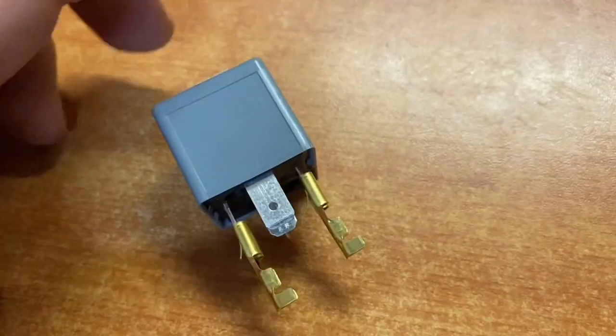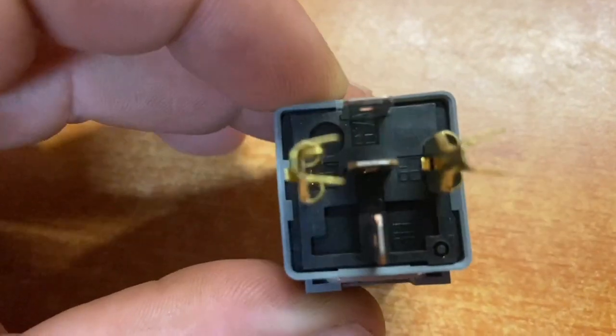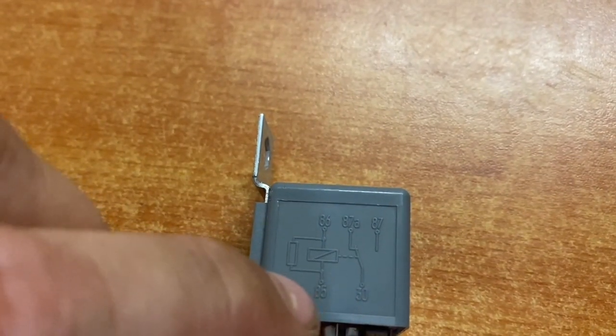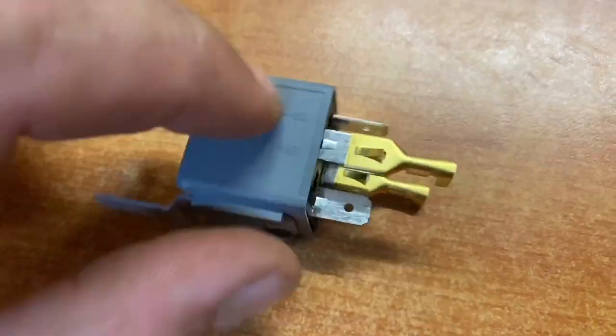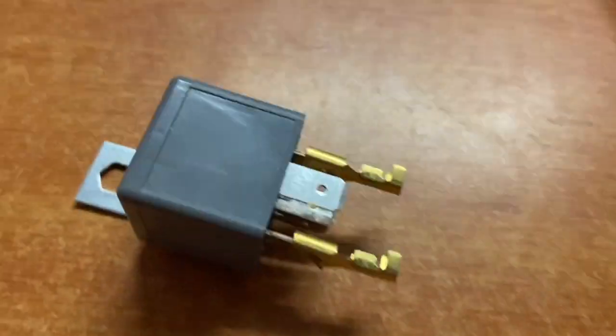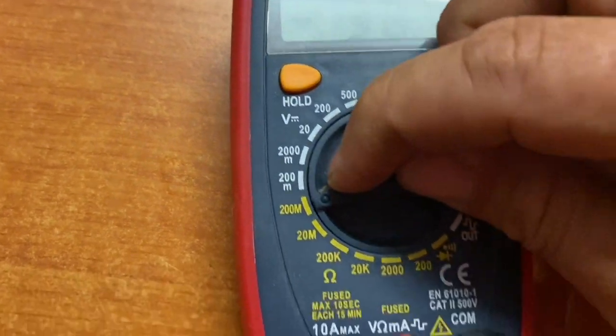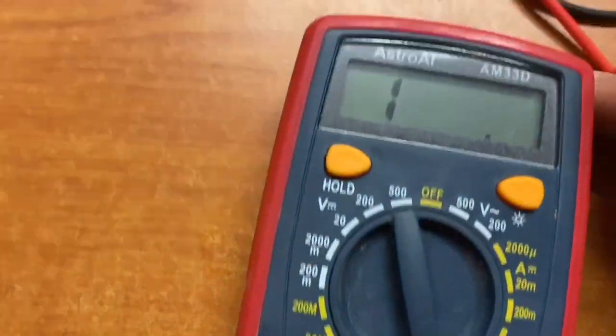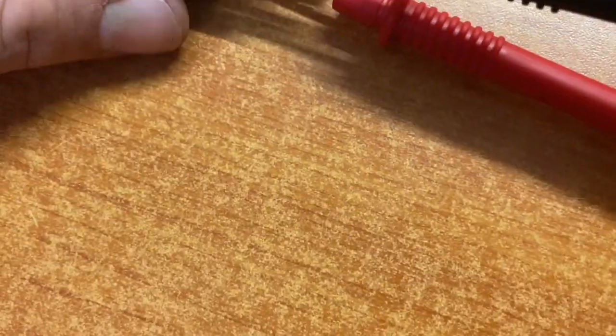12 volt relay here. We're going to ohm it out and check what type of current draw this relay should produce, and then we'll check out our amp meter and see what current draw it comes up with. On the magnetic part of the relay that latches it, 86 and 85, we're going to check our ohms. I know from experience that they're usually under 200 ohms, so I'm going to set it to the 200 ohm mark first and we'll see what it does. And we've got 78, 79 ohms resistance.